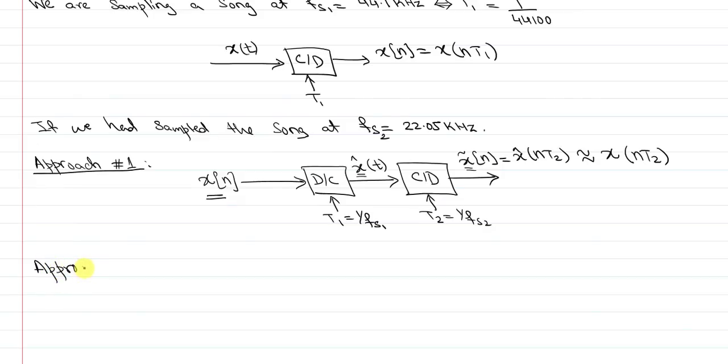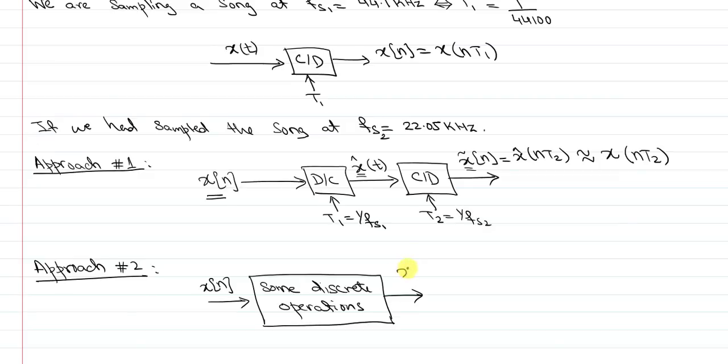So what the right approach is, actually, we start with a sequence x[n], and then we do some discrete operations so that we stay in our digital system. What are those discrete operations? That will be discussed later. So we perform some discrete operations to get x tilde of n, which is the same as if I had got x hat of n*t2 or approximately x of n*t2. What goes into this block is the ratio t2 over t1, which in this case is 2.